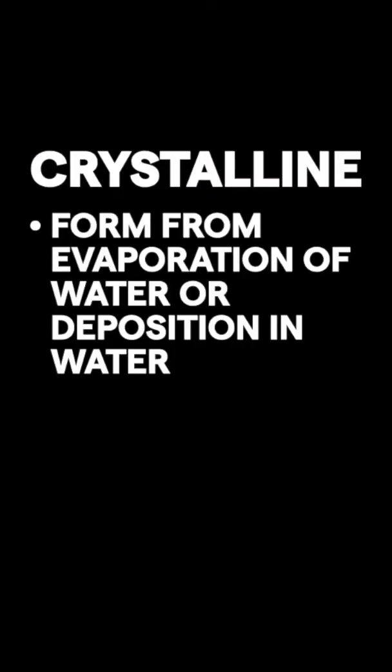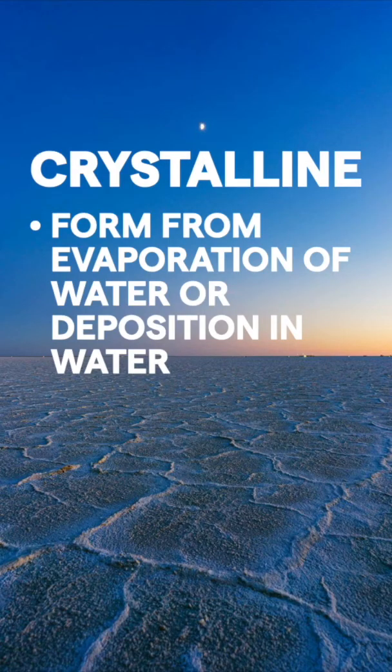The third and final type of sedimentary rocks are crystalline. These form when you have dissolved minerals in water and that water evaporates, or those minerals settle or deposit to the bottom. A great example of a crystalline sedimentary rock is rock salt, seen here when ocean water evaporates and the salt is left behind.